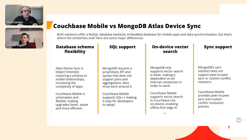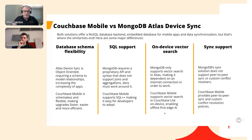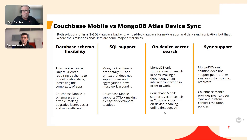On sync support, MongoDB's solution doesn't support peer-to-peer sync, meaning it can't sync without an internet connection to Atlas, and it doesn't support custom conflict resolvers. Couchbase Mobile provides peer-to-peer sync — data can sync between local devices without needing an internet connection. We also allow customers to create their own custom conflict resolution policies, which means we can support more edge use cases.